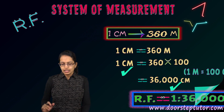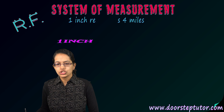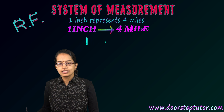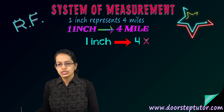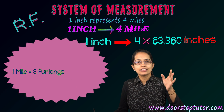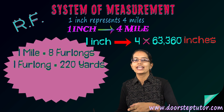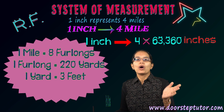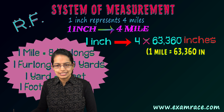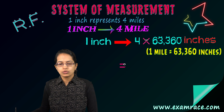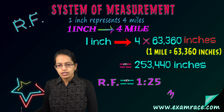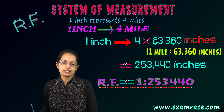Another example: 1 inch represents 4 miles. I convert 4 miles to inches. Since 1 mile equals 63,360 inches — from 8 furlongs × 220 yards × 3 feet × 12 inches — I get 4 × 63,360 = 253,440 inches. So the representative fraction is 1:253,440.